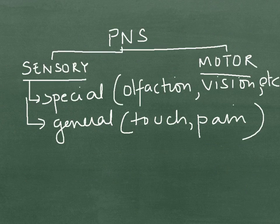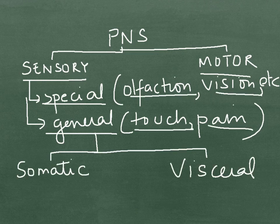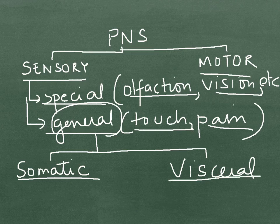The sensory unit is divided into the special part and the general part. The special sensations are olfaction and vision, and the general sensations are touch and pain. The general sensations are divided into somatic sensations — sensations from the superficial parts of the body and locomotor systems, such as touch, pain, and proprioception — and the visceral sensations, such as the pain of distension or dull pain from the viscera.